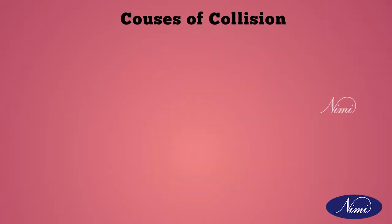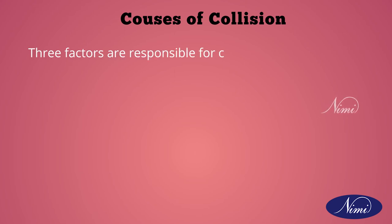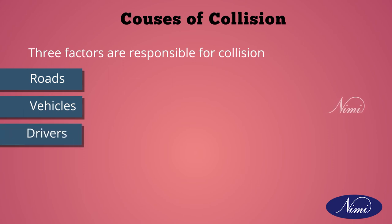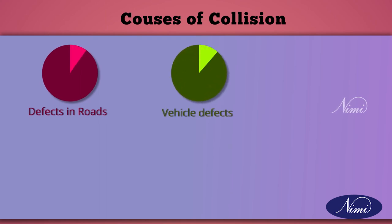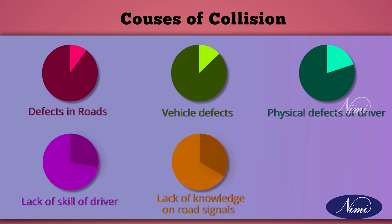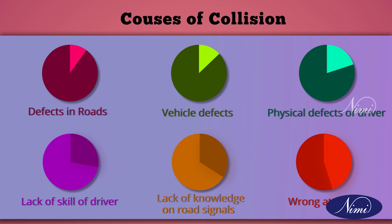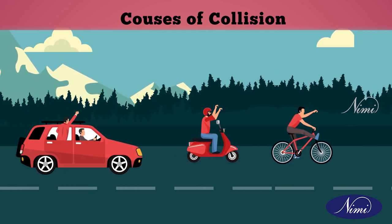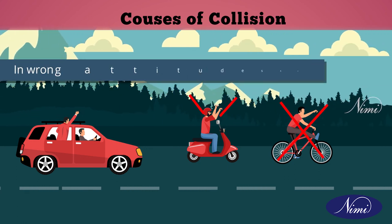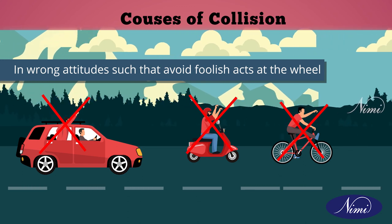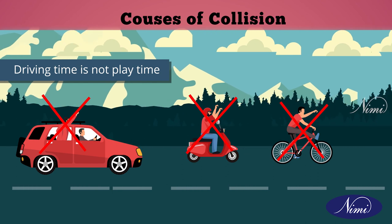The main causes of collisions: three factors are responsible for collisions on roads — the condition of the road, the condition of the vehicles, and the attitude of the drivers. Defects in the road, vehicle defects, physical defects of the driver, lack of skill, lack of knowledge of road signals, or wrong attitudes of the driver are the main causes of collisions. In wrong attitudes, avoid foolish acts at the wheel. Driving time is not play time. Traffic rules and guidelines must be strictly followed so that road travel will be safe and serious accidents and injuries can be avoided.